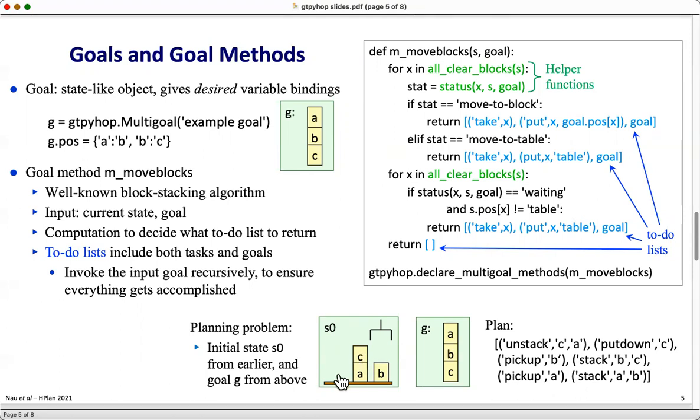Unstack c from a, put it on the table, pick up b, put it on top of c, and then pick up a, put it on top of b, as shown right here.